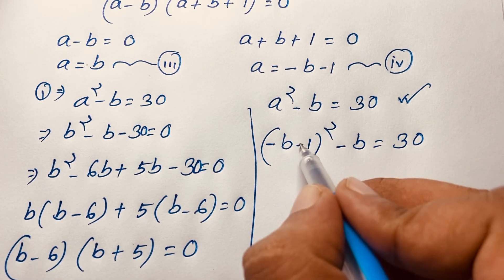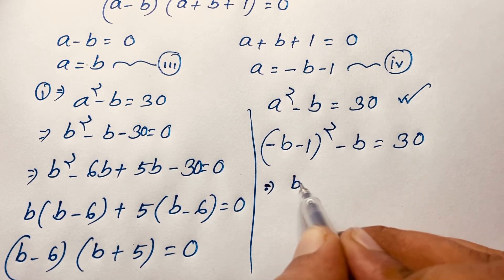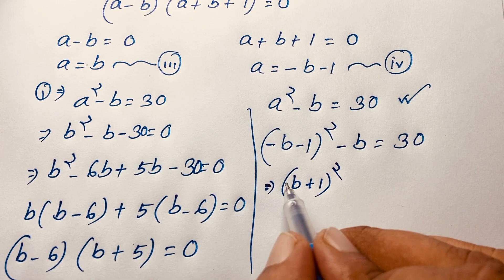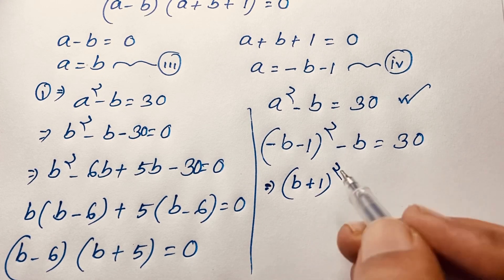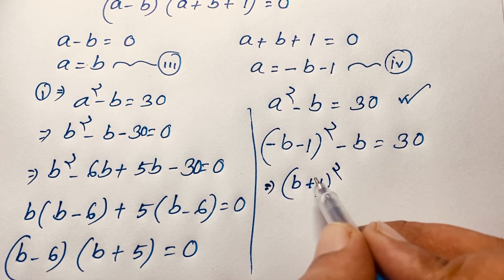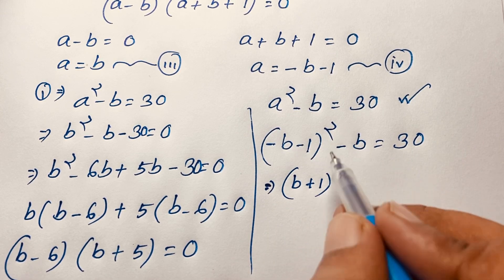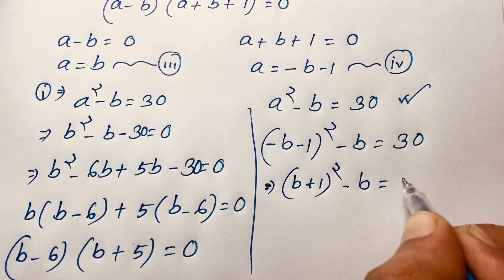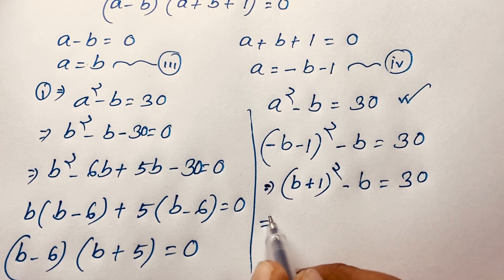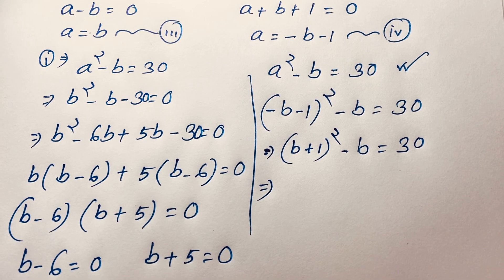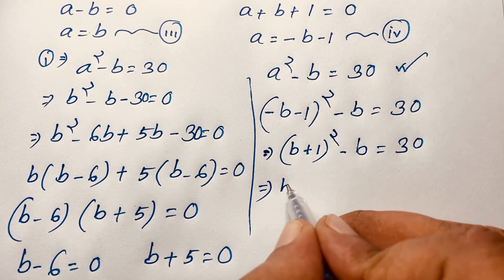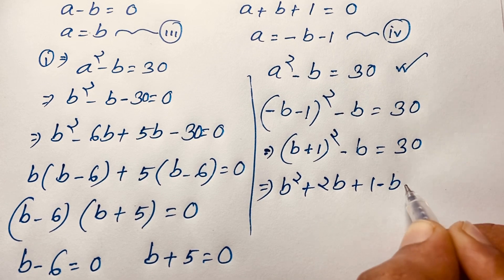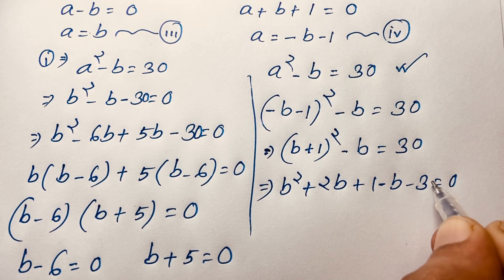I can say it will be positive because of the even power, so it will be B plus 1 whole to the power 2. I take negative 1 as common — 1 to the power 2 is positive 1 — so minus B minus 1 whole squared equals B plus 1 whole squared. Therefore B plus 1 whole squared minus B is equal to 30. Expanding: B squared plus 2B plus 1 minus B minus 30 is equal to 0.